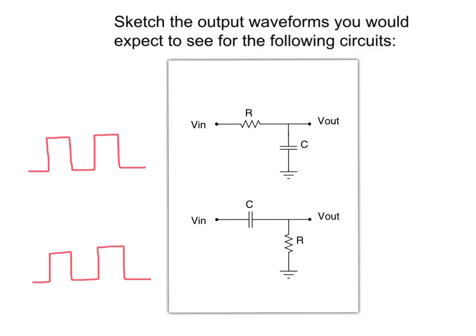First up are these two very simple RC circuits. Each circuit has two components, a resistor and a capacitor. The input and output nodes are clearly labeled. They are VIN and VOUT. The input waveforms to the circuits are square waves.